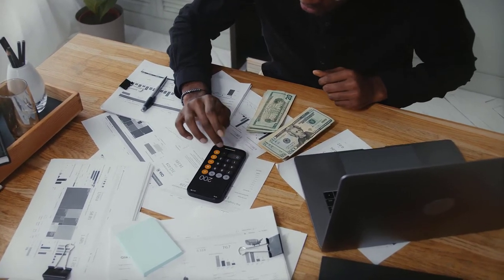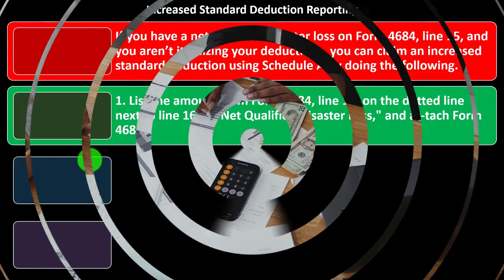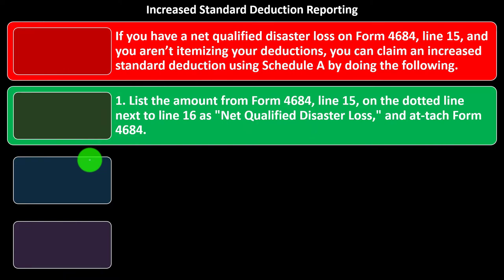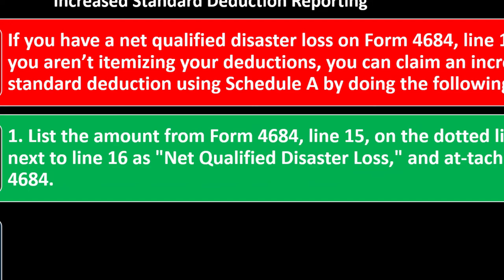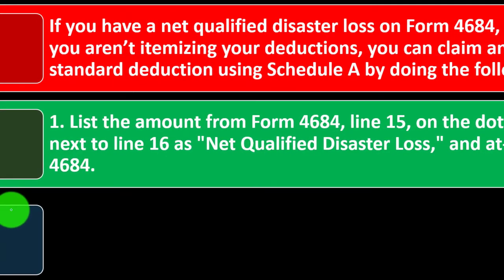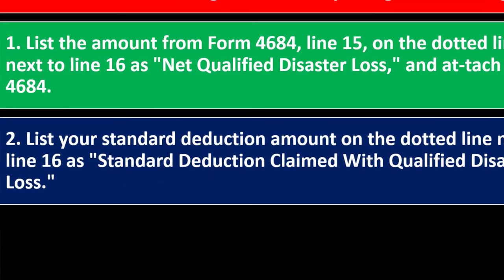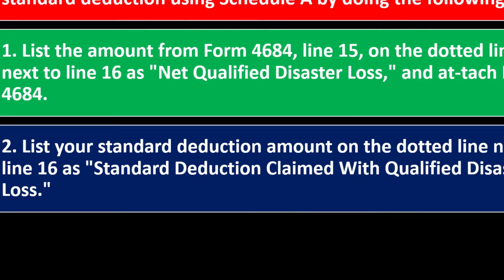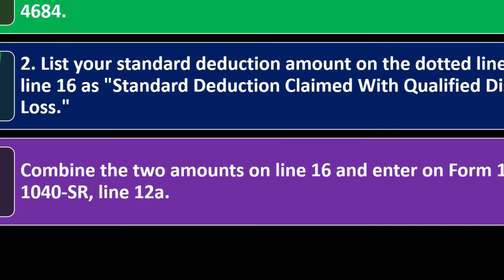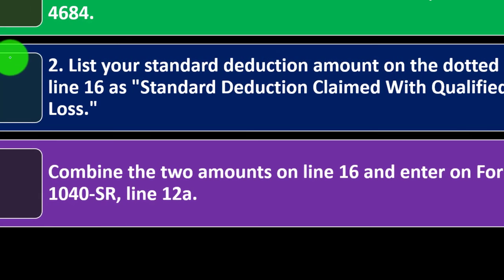This would only be applicable if you're in an area where a federal disaster took place. You'd want to do some research on that and see if you can pick it up if you're expecting to see it on multiple returns. First, list the amount from Form 4684, Line 15, on the dotted line next to Line 16 as 'net qualified disaster loss' and attach Form 4684. Second, list your standard deduction amount on the dotted line next to Line 16 as 'standard deduction claim with qualified disaster loss,' and combine the two amounts on Line 16 and enter on Form 1040 or 1040-SR, Line 12A.